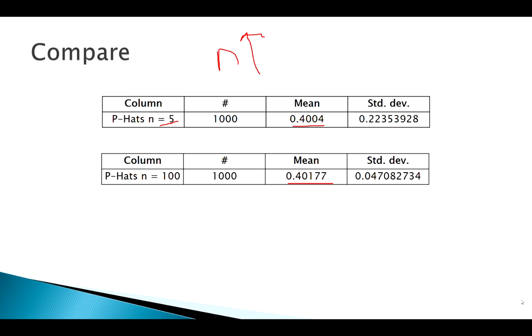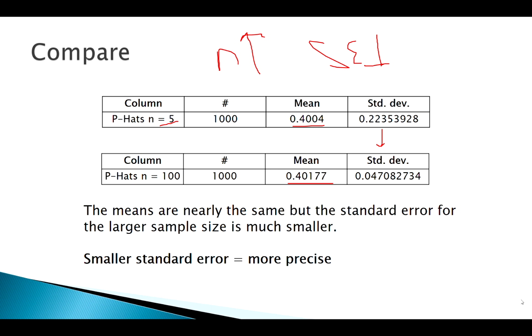But the big relationship that we saw before that we want to see, does it still hold? As n goes up, for bigger sample sizes, what's happening to the spread or the standard error? It looks like it is still going down.